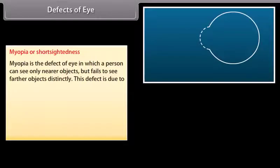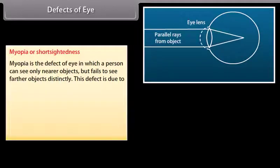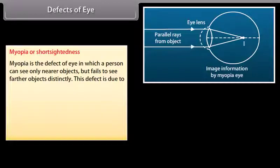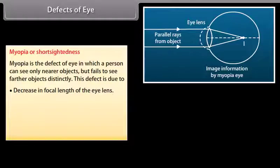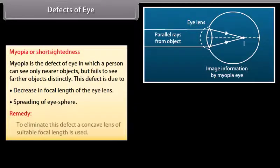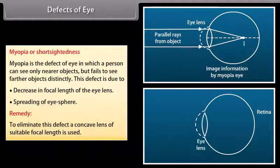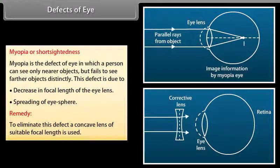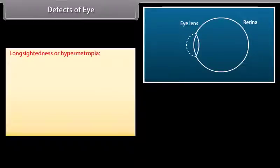Defects of eye. Myopia, or short-sightedness, is a defect in which a person can see only nearer objects but fails to see farther objects distinctly. This is due to a decrease in focal length of the eye lens or spreading of the eye sphere. Remedy: a concave lens of suitable focal length is used.